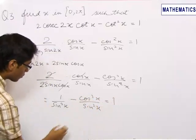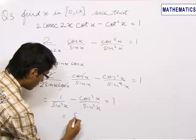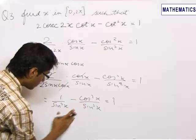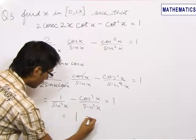On taking the LCM, this becomes 1 minus cos square x which is sin square x only. This becomes sin square x upon sin square x which is equal to 1 and it is given equal to 1.